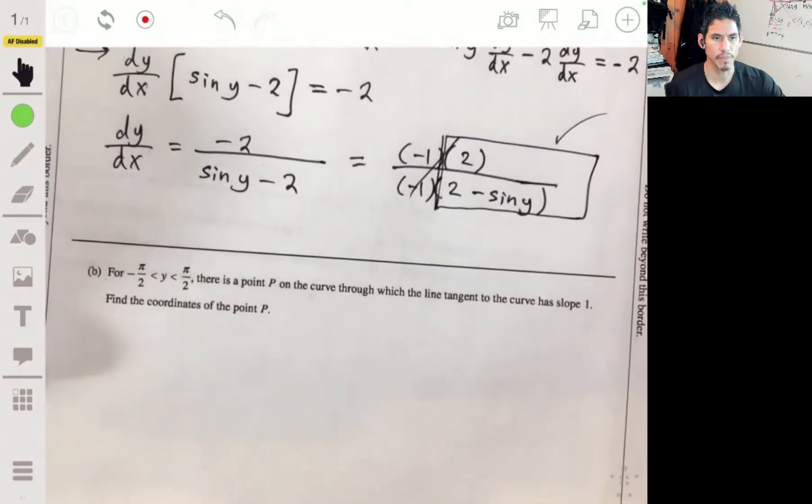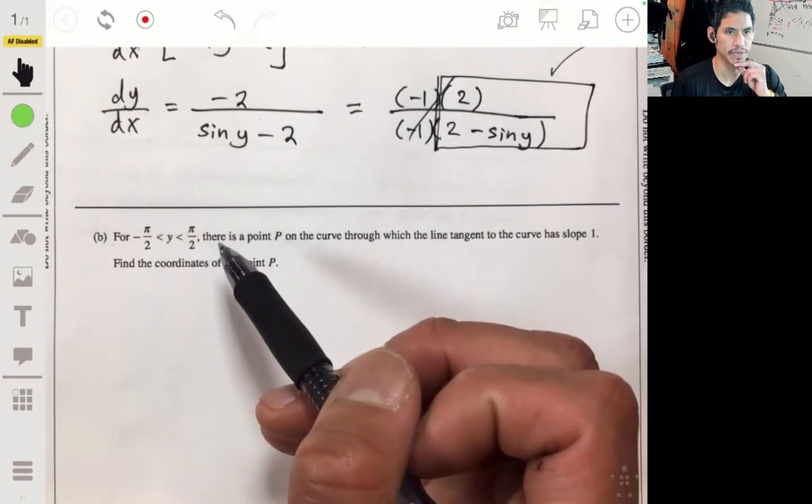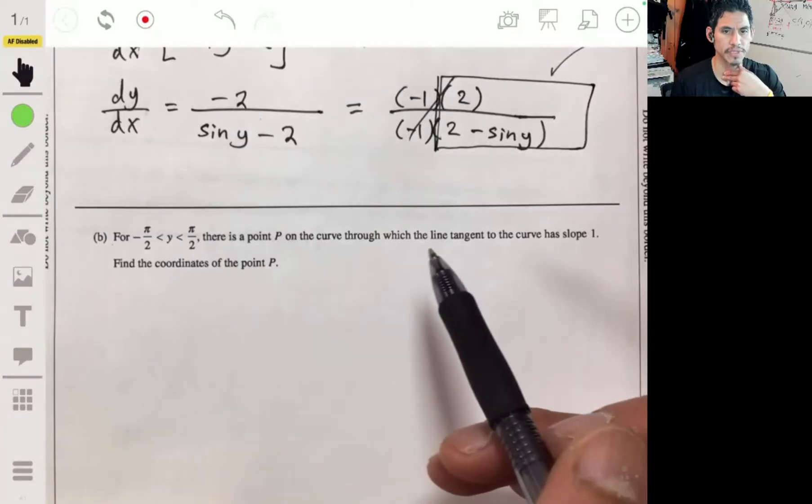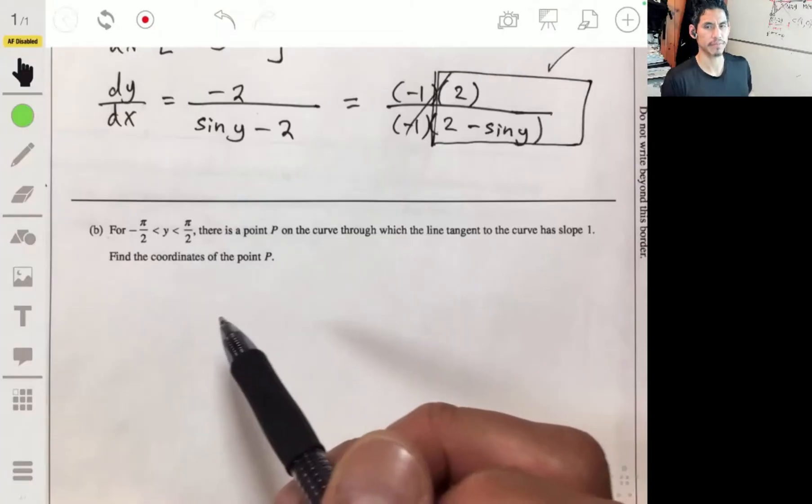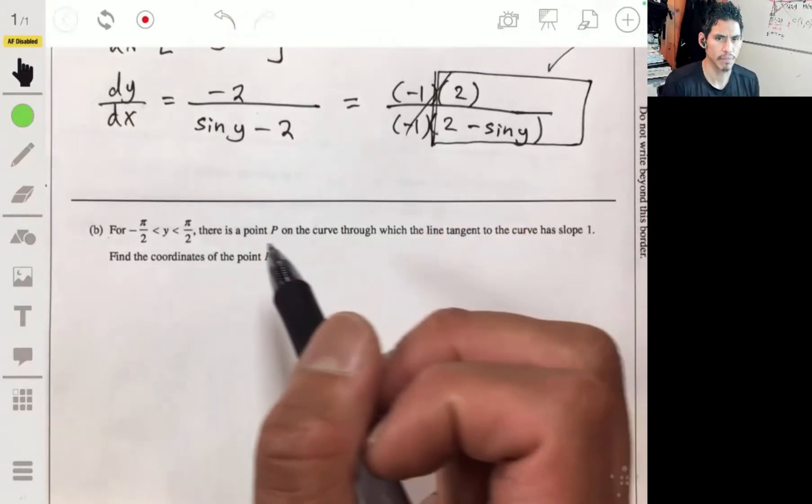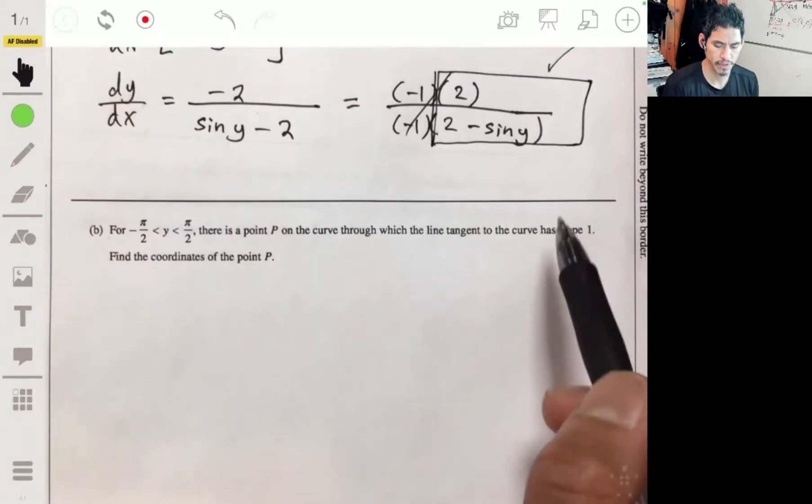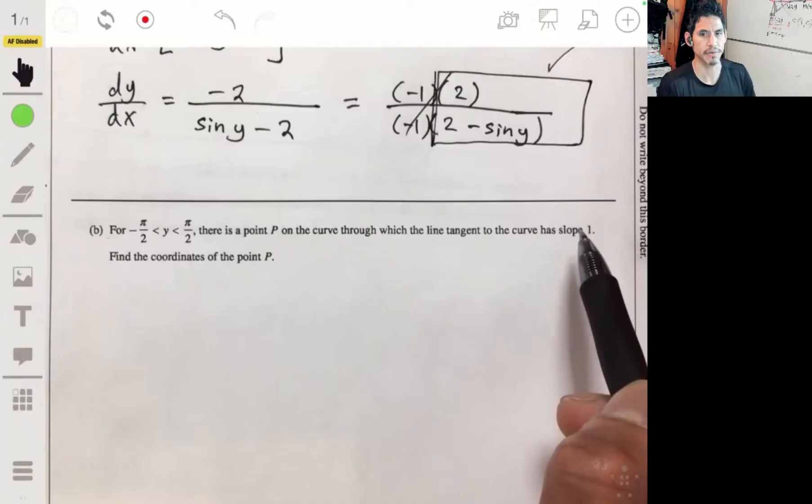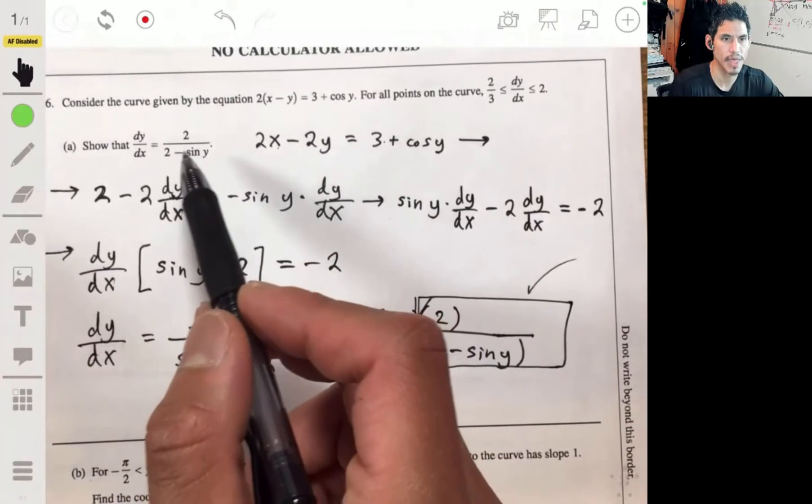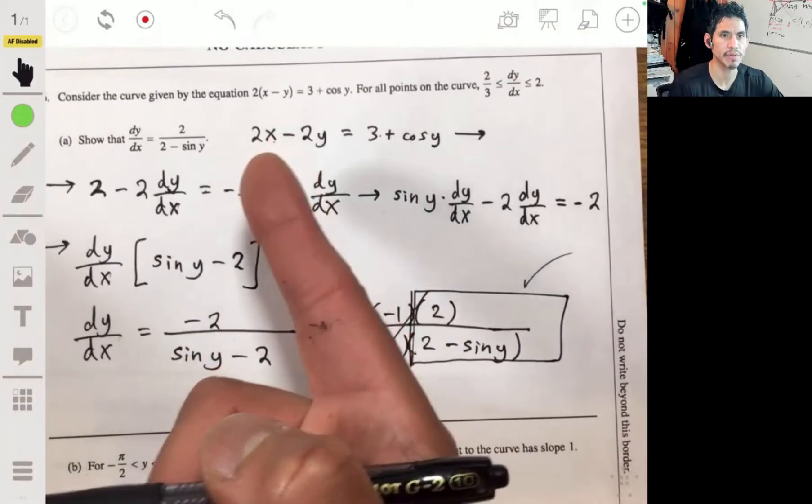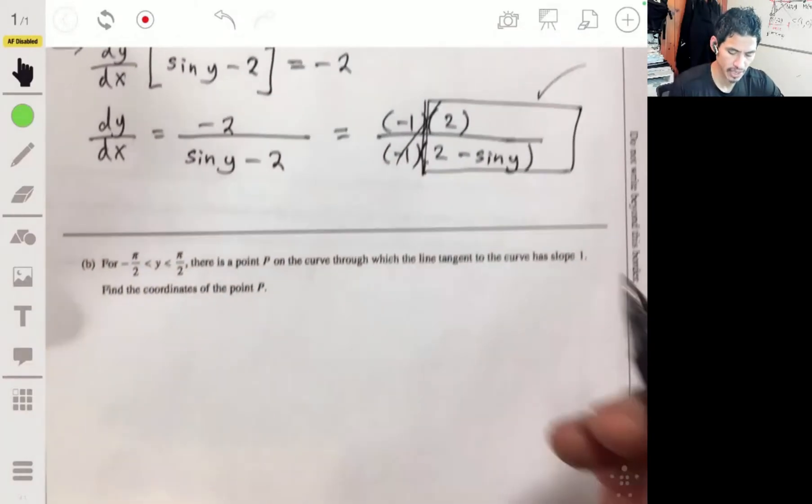All right. Part B, we're told that y is between negative pi over two and pi over two, and that there's a point on the curve through which the line tangent to the curve has slope one. So we have to find this point P. Remember that if we're talking about the tangent line with the slope, the slope is just equal to the derivative. So we're just going to set dy/dx equal to one, and then solve for y. Once you get y, then we plug that value in and get x, and then we're going to get our coordinate pair xy.